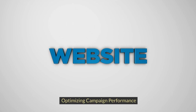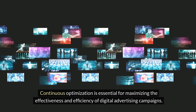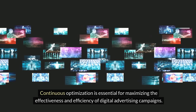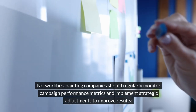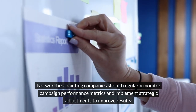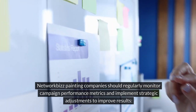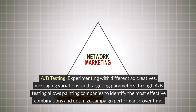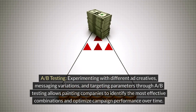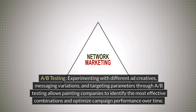Continuous optimization is essential for maximizing the effectiveness and efficiency of digital advertising campaigns. Network Biz painting companies should regularly monitor campaign performance metrics and implement strategic adjustments to improve results. Experimenting with different ad creatives, messaging variations, and targeting parameters through A/B testing allows painting companies to identify the most effective combinations and optimize campaign performance over time.